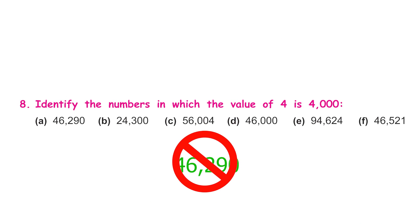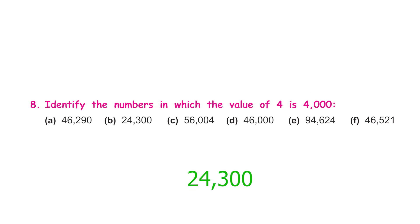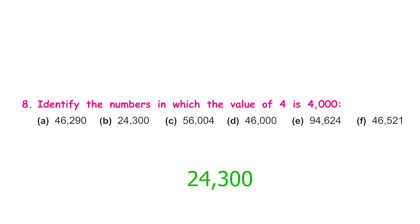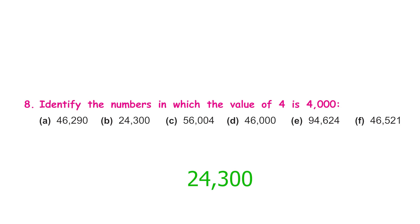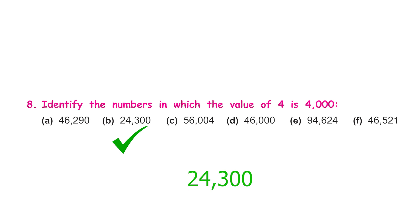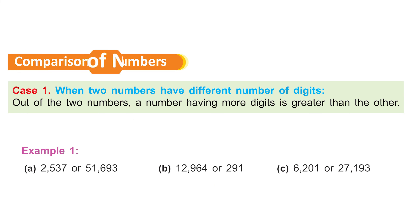For part b, start counting from the right: one, two, three, four — yes, four comes under the thousands column and the value of four is four thousand. So part b qualifies, and the value of four is four thousand here. Try to do the rest of the sums yourself.